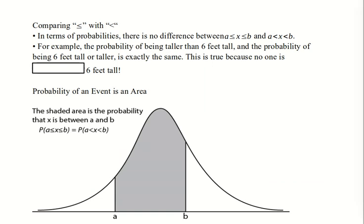The next page reminds us that equality does nothing for us with probabilities. If you're asked to look at a probability that is a strict inequality versus a probability that says 'or equal to,' they are the same. In terms of probabilities, finding the probability that the random variable is in and includes the endpoints is the same as asking for the probability that the random variable x is strictly between the endpoints. For example, the probability of being taller than 6 feet and the probability of being 6 feet tall or taller is exactly the same. That's true because no one is exactly 6 feet tall.